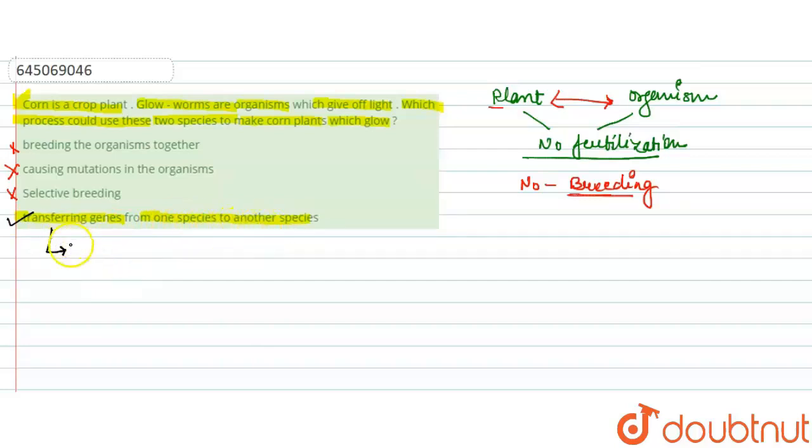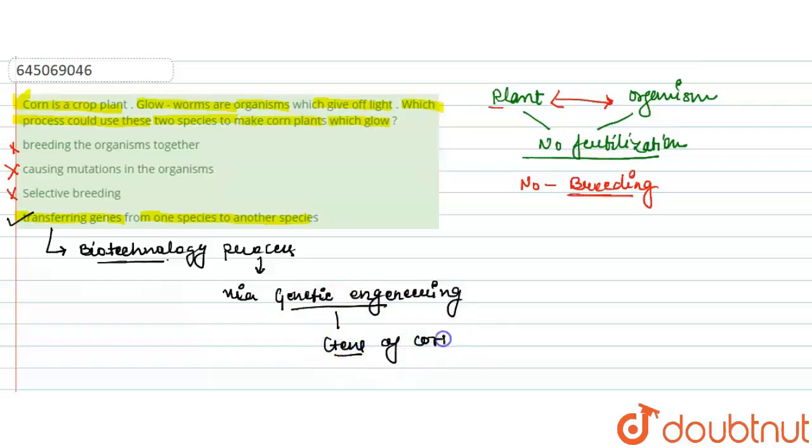Or we can say that process in which, by the help of genetic engineering, the gene of corn plant is inserted into the worms or the glowworms.